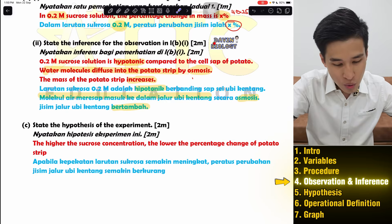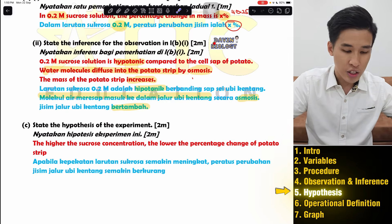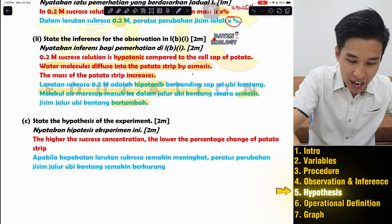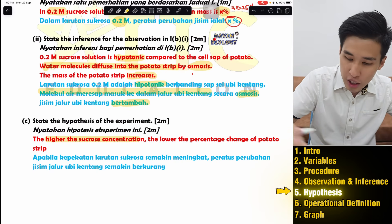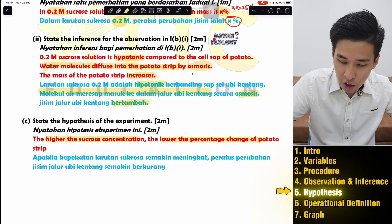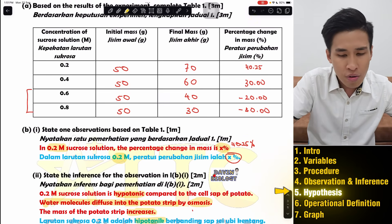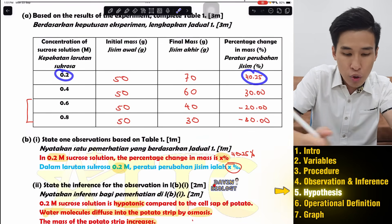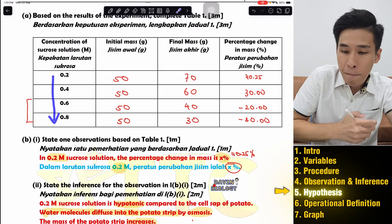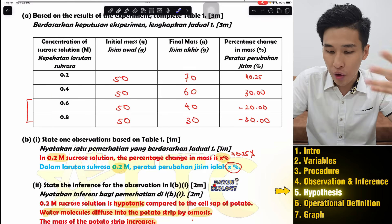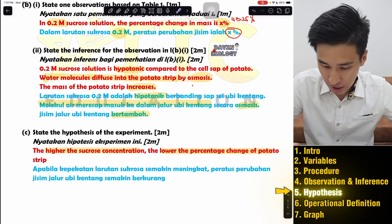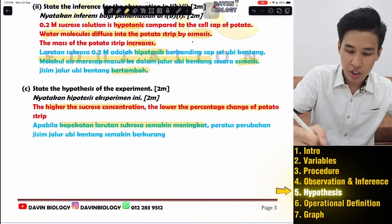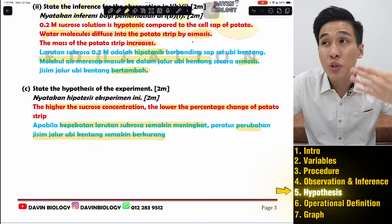The hypothesis is very simple — it follows the pattern: the higher [MV], the lower [RV]. For example: the higher the sucrose concentration, the lower the percentage change in mass of the potato strip. Or you can write the reverse: the lower the concentration of sucrose, the higher the percentage change in mass. As concentration increases, more water diffuses out and mass decreases.